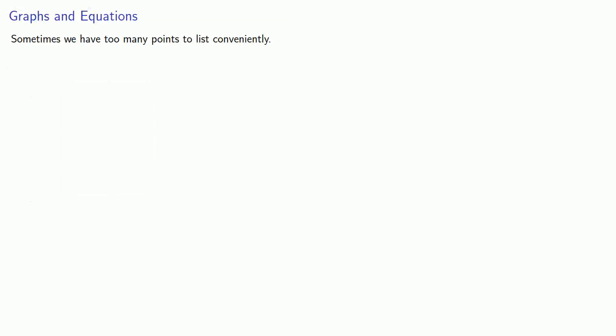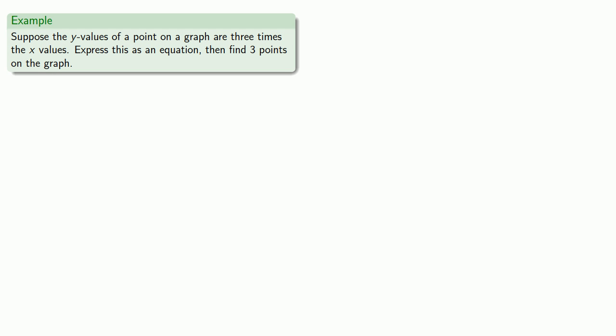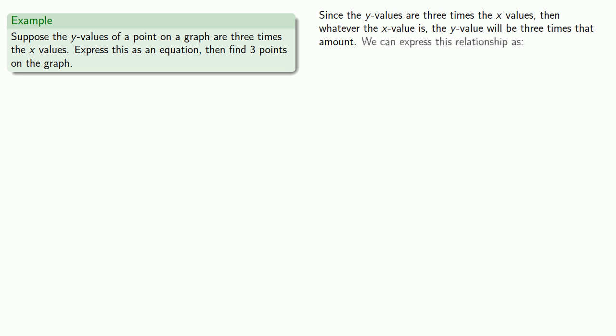Sometimes we have too many points to list them conveniently, and so instead we represent the graph by writing the relation between the x and y values. For example, I might say something like this: Suppose the y-values of a point on a graph are three times the x-values. First of all, we want to express this as an equation and then find three points on the graph. Since the y-values are three times the x-values, then whatever the x-value is, the y-value will be three times that amount. And we can express this as y equals 3x.